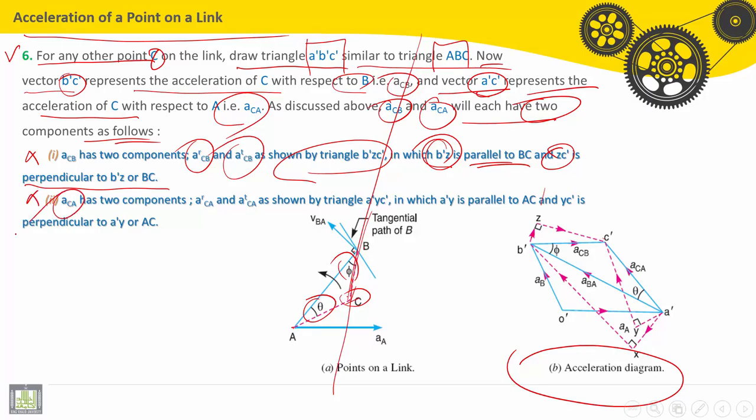ACA has two components also, radial component AR-C-A and tangential component AT-C-A, as shown by the triangle A-Y-C-dash.